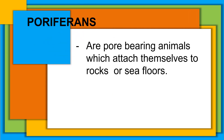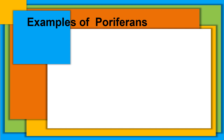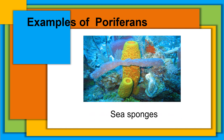Another group are called peripherans. Peripherans are pore-bearing animals which attach themselves to rocks or sea floors. Examples of peripherans are sea sponges.